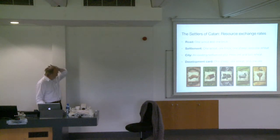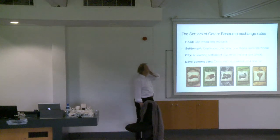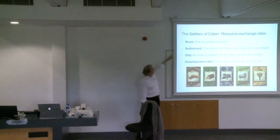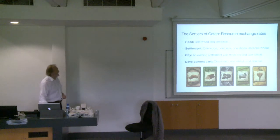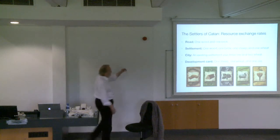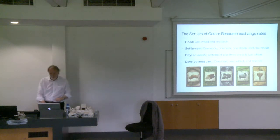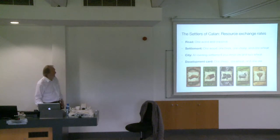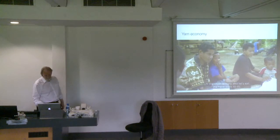In Settlers of Catan, you collect sets of resources. A road costs one wood and one brick. A settlement costs one wood, one brick, one sheep, and one wheat. A city costs an existing settlement plus three ore and two wheat. A development card costs one sheep, one wheat, and one ore. It's a table of resource exchange rates — the game is more complicated than that, but that gives you the idea.